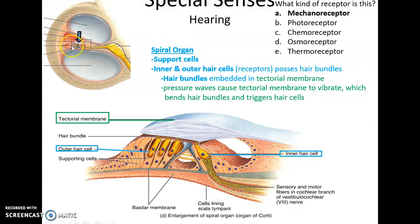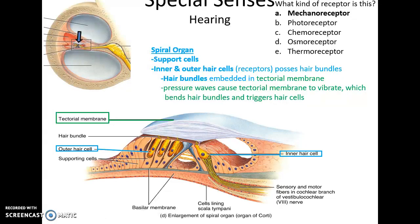Here is a close-up cross-section of the cochlear duct. We can see the spiral organ with its tectorial membrane and its epithelial cells that support the receptors, called the hair cells. We have outer hair cells and inner hair cells. The hair cells have structures called hair bundles that are embedded in the tectorial membrane. When pressure waves come into the cochlear duct, they hit the tectorial membrane, causing it to vibrate, which bends the hair bundles. This physical bending is the signal transmitted to the sensory neurons — meaning the hair cells are mechanoreceptors.